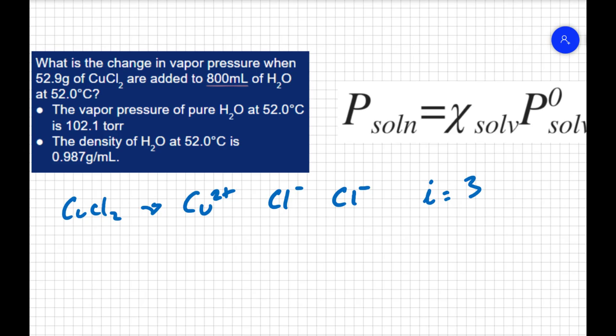We want to find the final vapor pressure of the solution. I know the initial vapor pressure of the solvent, water, so we need to find the mole fraction of the water. So I have 800 milliliters of water, and now the water is not at room temperature. It doesn't have a density of one.